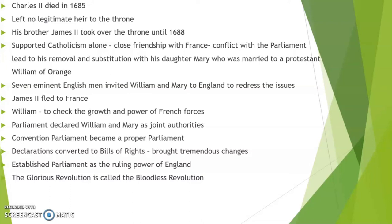Charles II was constantly troubled by religious issues and was unable to solve the problem between Catholics and Protestants. He died in 1685 without leaving a legitimate heir to the throne, and naturally the responsibility of the nation fell on his brother James II, who ruled until 1688.